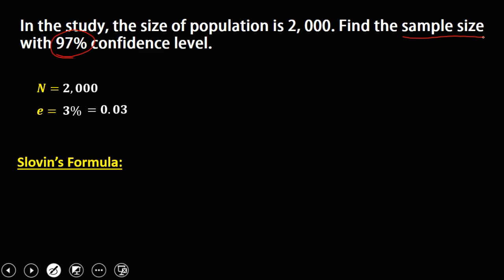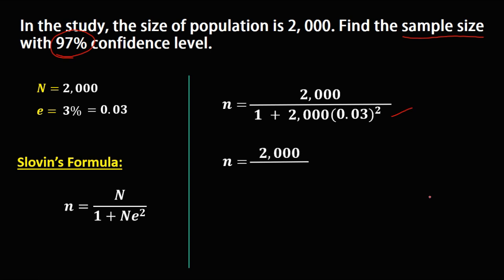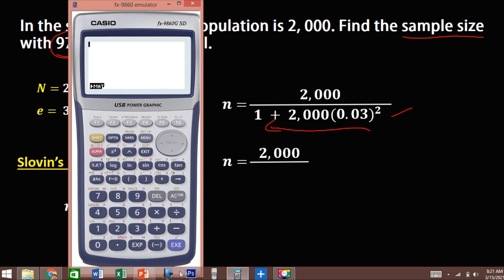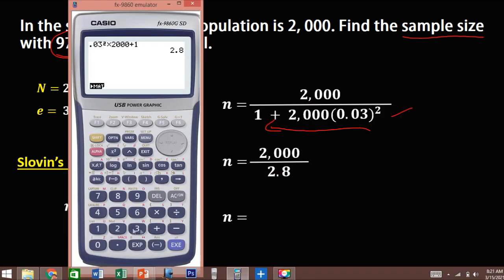To solve for the sample size using Sloven's formula, substitute all the values. We have the population size 2000 over 1 plus 2000 times e squared, where e is 0.03. Simplify the denominator from right to left: 0.03 squared, then times 2000, then plus 1, giving us 2.8.